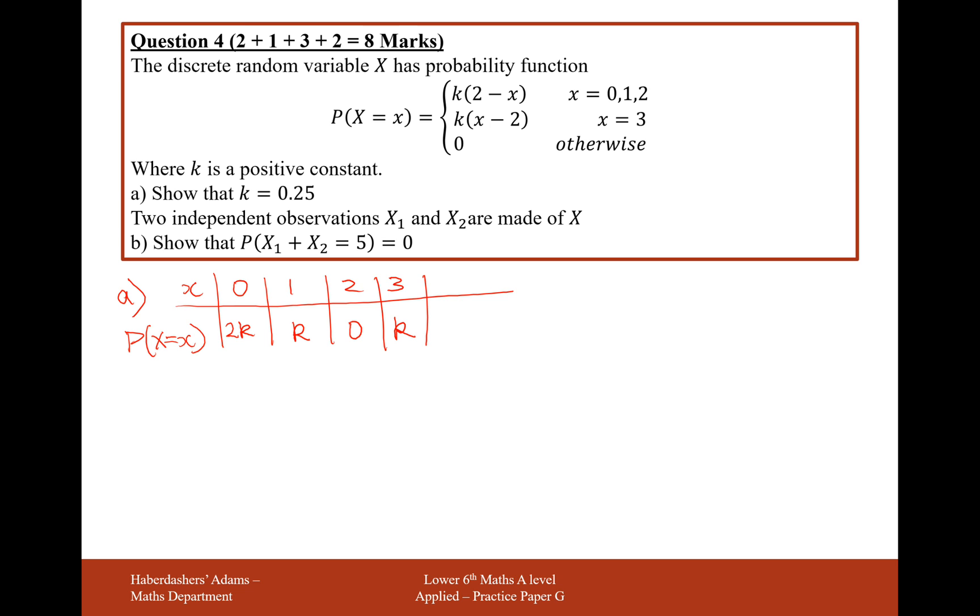We know from our facts of probability that all probabilities must add up to make 1. So here we clearly have 4k equals 1, therefore k equals 0.25.